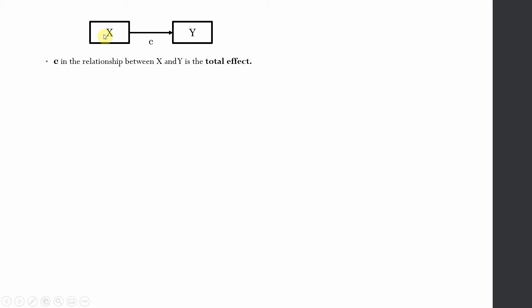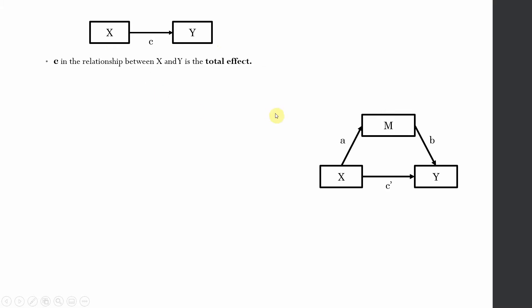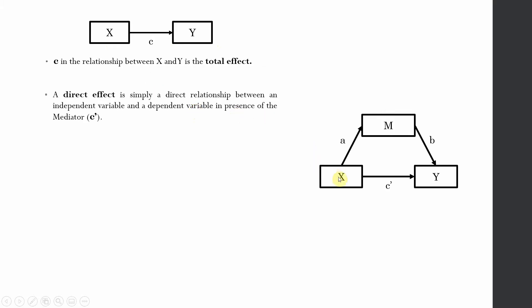Let us say I have a variable X and a variable Y. The influence of X on Y is the total effect without the presence of any other variable. Now in case I have variable X, variable Y where X is my IV, Y is my DV, and M is my mediator, the effect of X on Y in presence of the mediator is referred to as a direct effect, which was the total effect earlier.